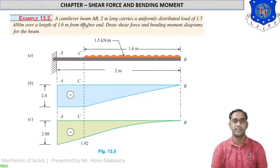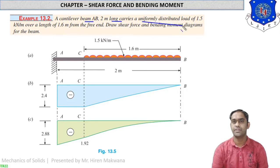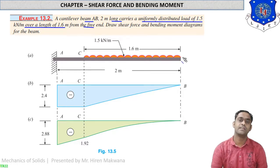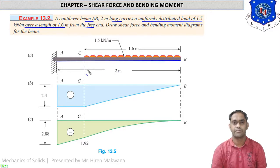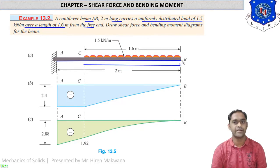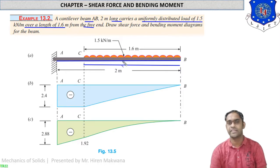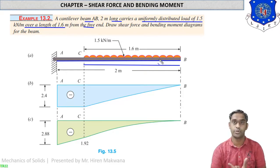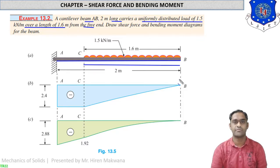What is given in the data: cantilever beam AB, 2 meters long, carries a uniformly distributed load of 1.5 kN per meter over a length of 1.6 meters from the free end. In the figure, the UDL is only on 1.6 meter length from free end B. There are three points A, C, and B, where CB is subjected to UDL and AC is free with no load. Draw the shear force and bending moment diagrams.